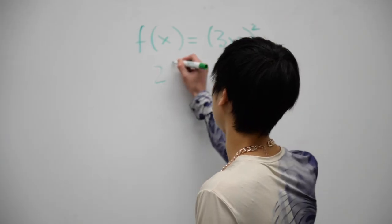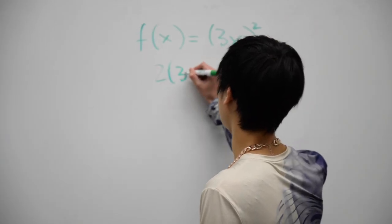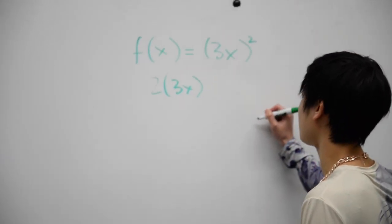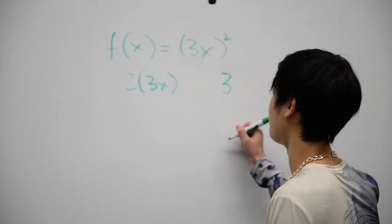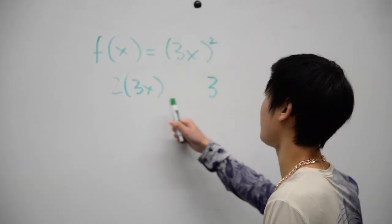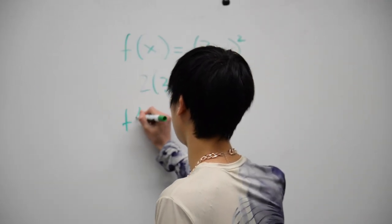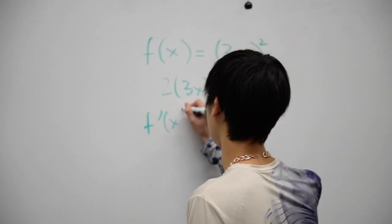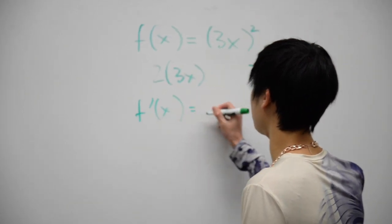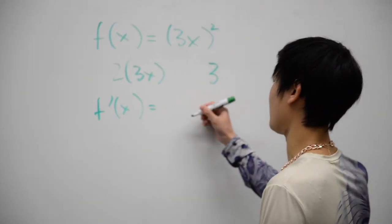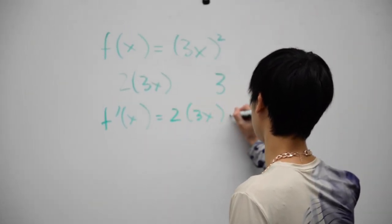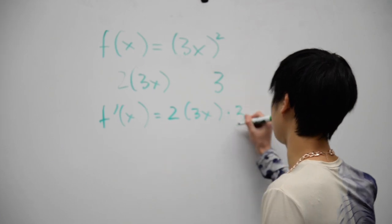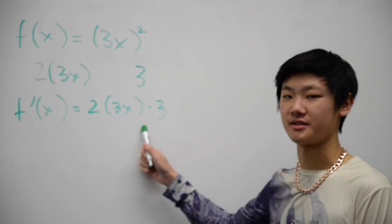I know you might be thinking, 'oh lord' — just check out this example I got on the board. This is two times three of x; the derivative of the inside is three. If you get the derivative of f of x, you just want to apply these two together. That's your answer.